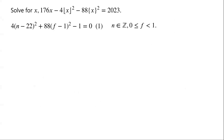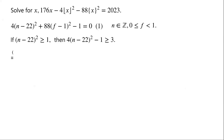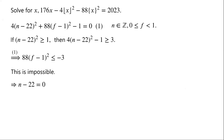Since n is an integer, n minus 22 is also an integer. If (n minus 22) squared is greater than or equal to 1, then 4 times (n minus 22) squared minus 1 must be greater than or equal to 3. Then from equation 1, we know that 88 times (f minus 1) all squared is less than or equal to negative 3. This is impossible. So this implies that n minus 22 must equal 0, that is, n equals 22.